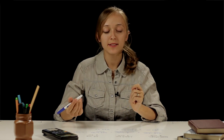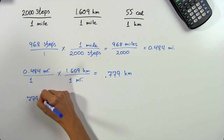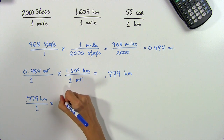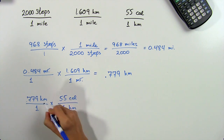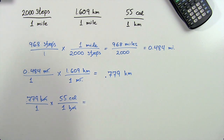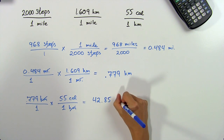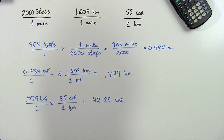Now our last step is to convert this to calories burned. We take the 0.779 kilometers, put it over 1, and multiply by our conversion factor, which is 55 calories per 1 kilometer. The kilometers cancel out, and we multiply across. We get 42.85 calories burned by walking 968 steps. And that's how we convert steps to miles to kilometers to calories burned. Thanks for watching!